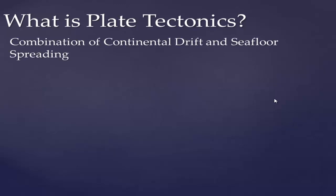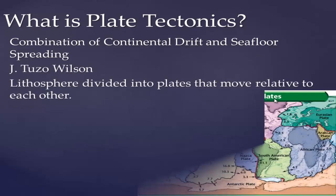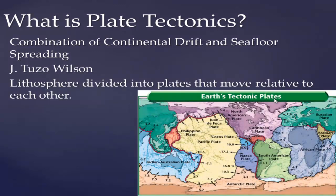Plate tectonics is basically the combination of continental drift that Wegener came up with and seafloor spreading. Continental drift was rejected originally because Wegener couldn't describe how the continents were being pushed apart. Seafloor spreading accomplishes that. Combined, the theory states that the lithosphere — basically the crust and the upper parts of the mantle — are divided into plates that move relative to each other: they can collide, be pulled apart, or grind past one another.